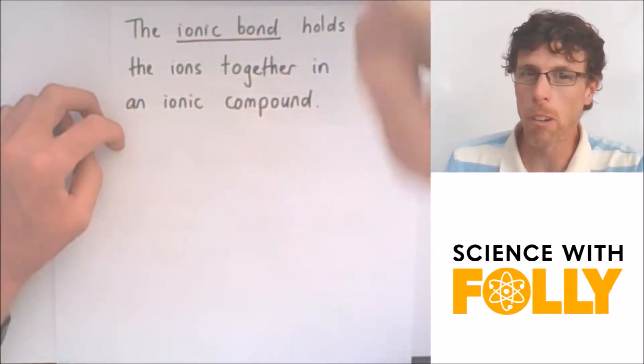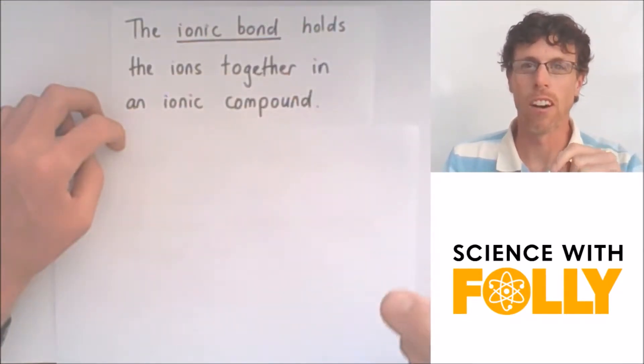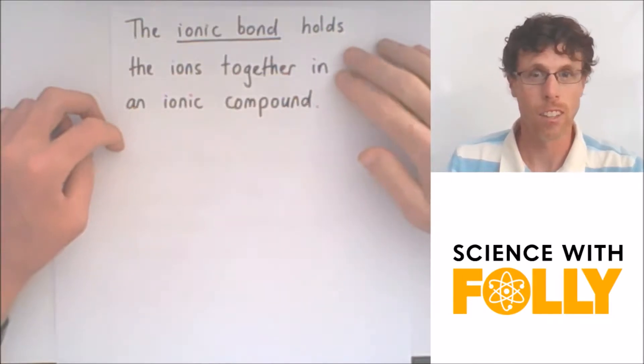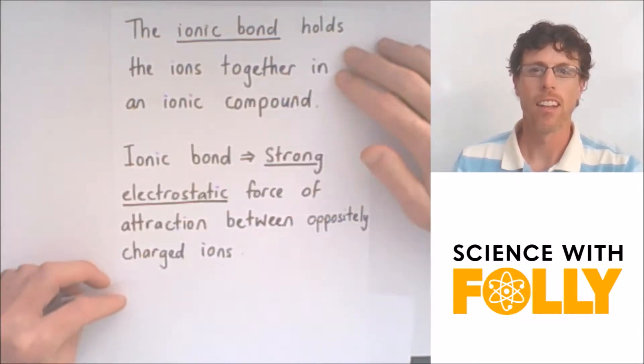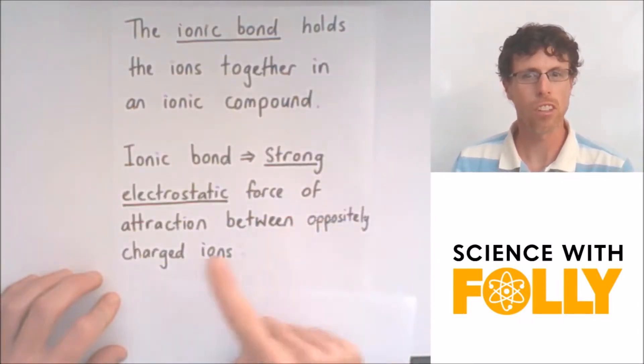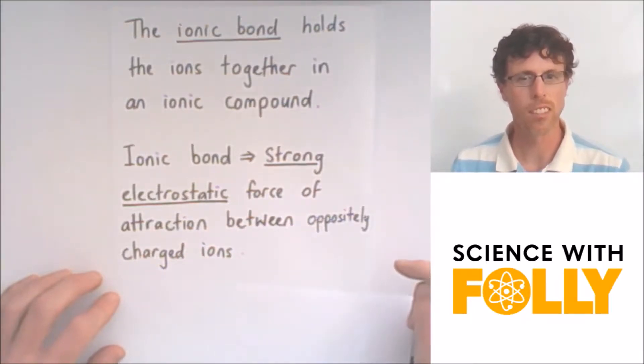So it's the ionic bond which holds the ions together in an ionic compound. And an ionic bond is a strong electrostatic force of attraction between oppositely charged ions.